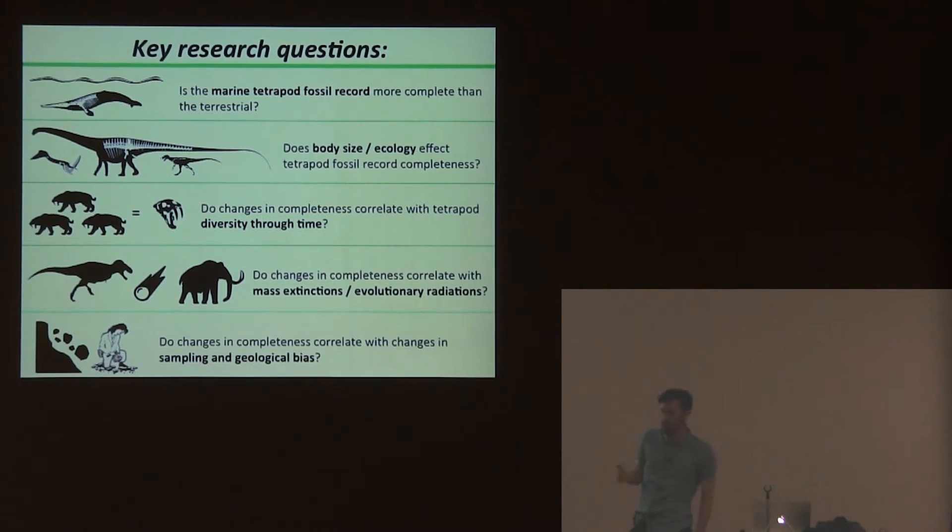The fossil record is strongly influenced by biases, and specimen completeness is likely one of them. Preservation controls our ability to identify specimens to low taxonomic levels, which then influences our interpretation of diversity and mass extinctions.